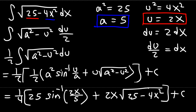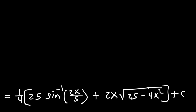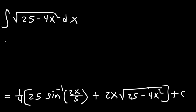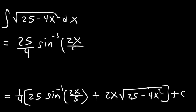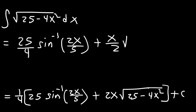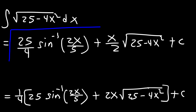Distributing the one fourth, the final answer is: the integral of the square root of 25 minus 4x squared dx equals 25 over 4 times arcsin(2x/5) plus (x/2) times the square root of 25 minus 4x squared, plus C.